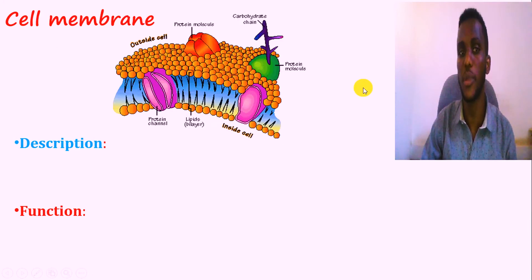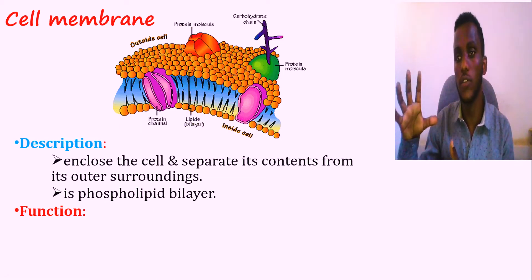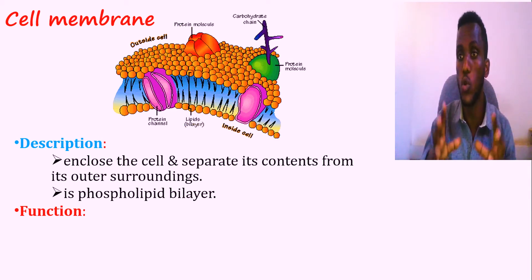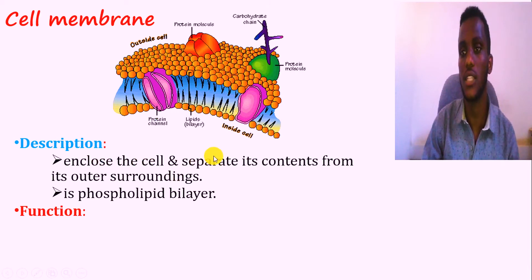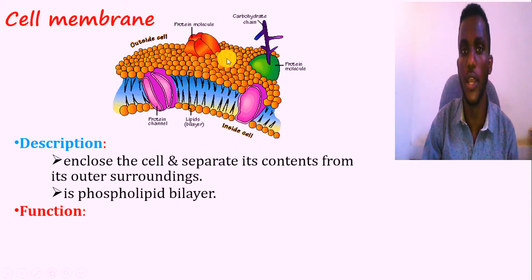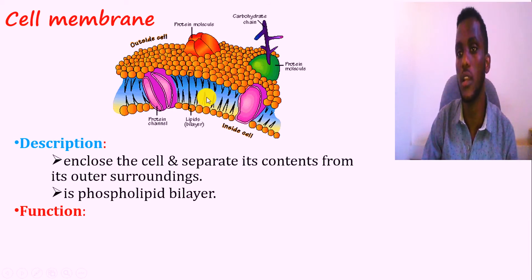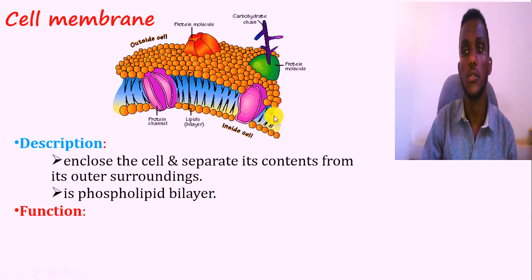Next is the cell membrane. In plant cells, the cell membrane is found as the outer cover beneath the cell wall. In animal cells, the cell membrane encloses all the cells and the external environment. The structure of the cell membrane is a phospholipid bilayer. There is a head part, which is hydrophilic — the water-loving region — and the tail part, which is hydrophobic — the water-fearing region. This is the phospholipid bilayer structure.